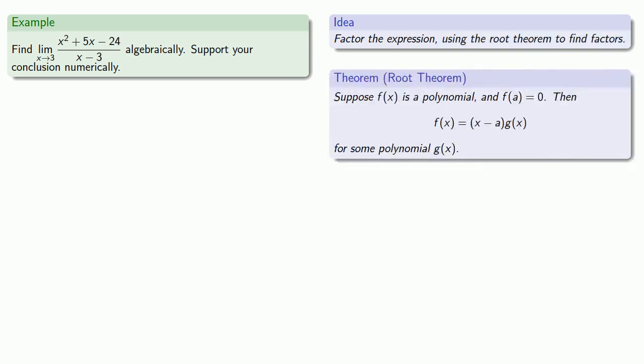In case you've forgotten, the root theorem is that if you have a polynomial f(x), and you know that f(a) is equal to zero, then you know that x minus a is a factor. The reason why it's useful is that we only ever worry about factoring if we get a zero in the numerator and the denominator, which means we'll have a factor immediately. Since x squared plus 5x minus 24 is zero when x is equal to three, then we know that x minus three is a factor, and so I can write the factorization almost immediately.